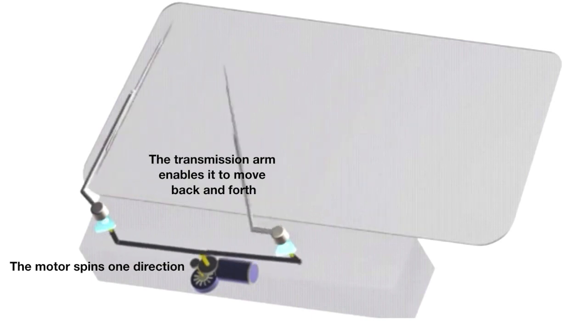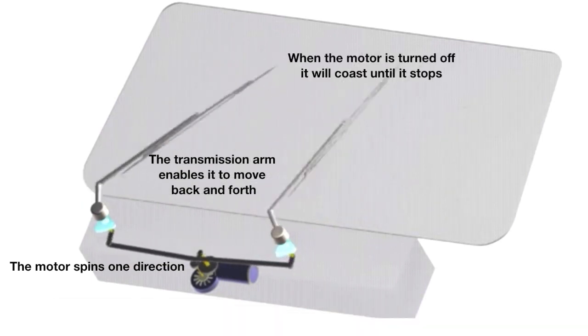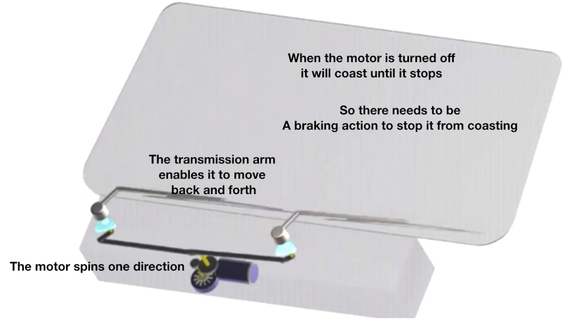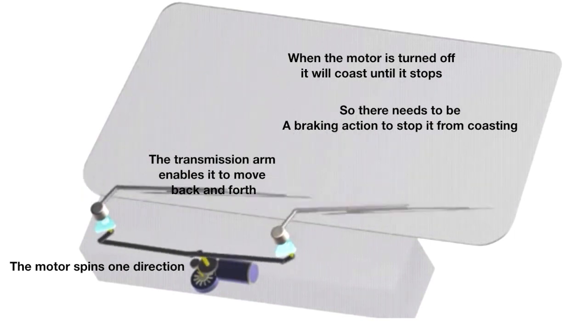The transmission arms enable it to move back and forth. When the motor is turned off it will coast until it stops, so there needs to be a braking action to stop it from coasting.